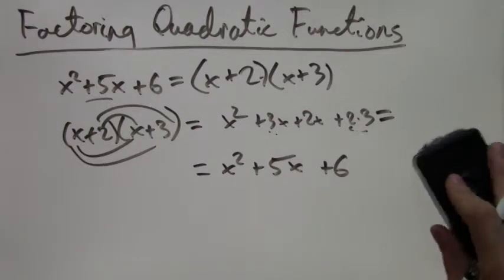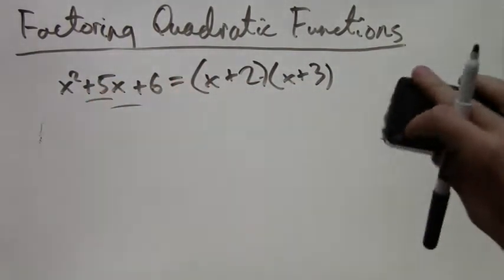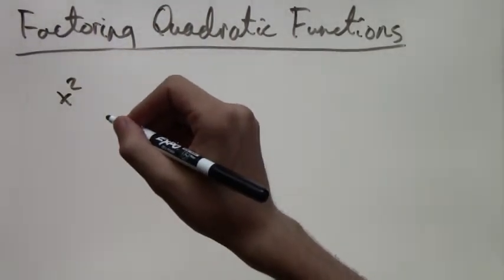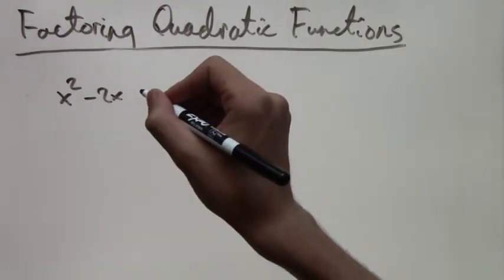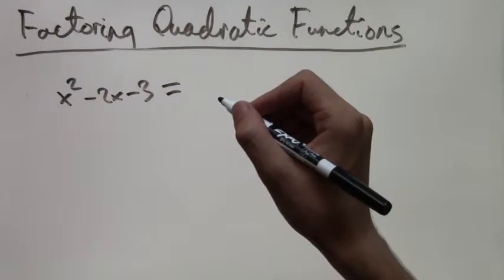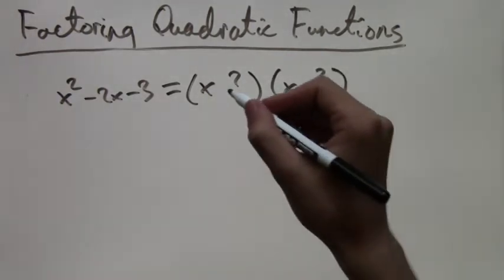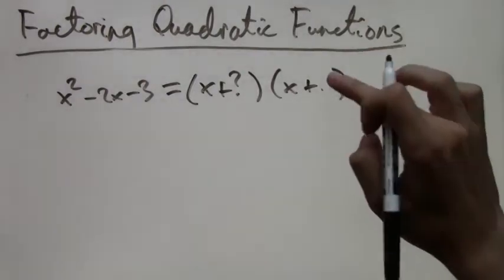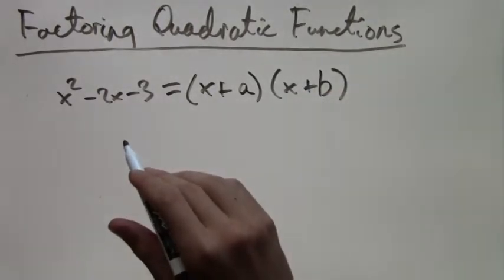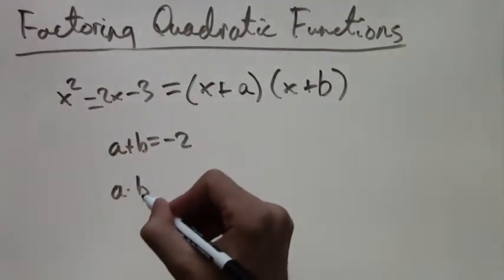So now we move on to the final example: x squared minus 2x minus 3. Since we're factoring it, it's going to equal x plus a times x plus b. And I'm writing these question marks because really it's just some sort of unknowns, but we're going to relabel them as a and b so we can keep track of them more easily. All we need to do is find them using our rule. The rule is that a plus b equals negative 2, and a times b equals negative 3.